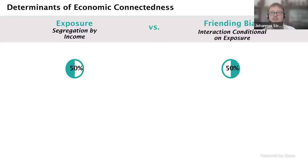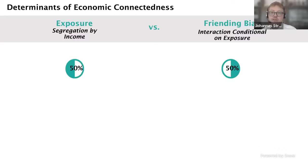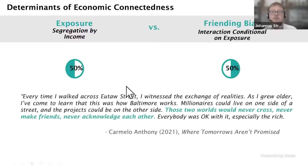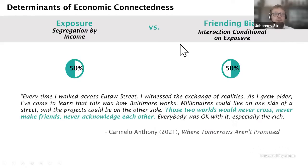The importance of friending bias is documented in ethnographic evidence. A quote from Carmelo Anthony's memoirs of growing up in Baltimore describes how millionaires could live on one side of a road and the projects on the other, with very little spatial segregation, yet those two worlds would never cross or make friends with each other. This type of friending bias shows that even occupying similar spaces is not enough to create the cross-class links that matter for economic mobility.